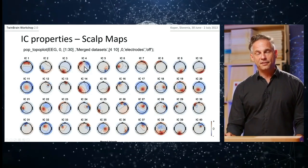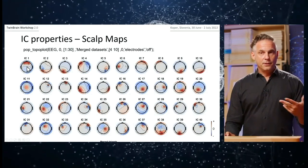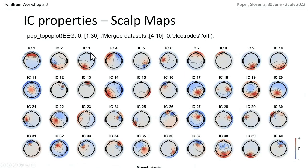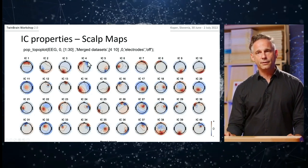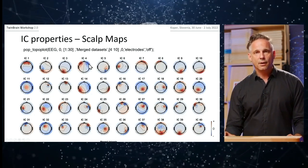The distribution of scalp maps tells you where the origin of the distribution pattern is. For vertical eye movement, you see very high weighting at frontal sensors — only one pole covering the entire forehead. Comparing to horizontal eye movements, there's a clear dipolar pattern with a positive and a negative pole. As I'll explain, two eyes are like two batteries with a negative resting potential in the retina.